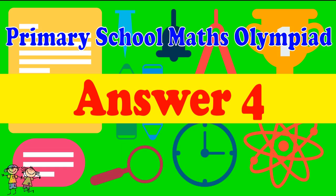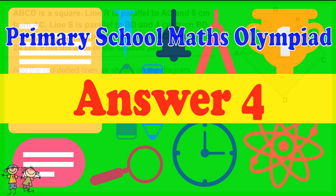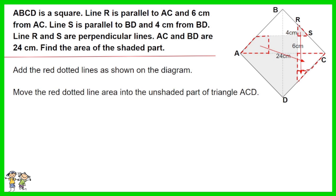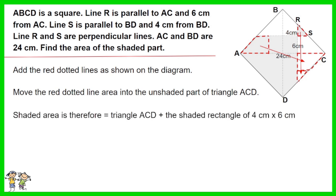Answer for Question 4. Add the red dotted lines as shown on the diagram. Move the red dotted line area into the unshaded part of triangle ACD. The shaded area is therefore equal to triangle ACD plus the shaded rectangle of 4 cm by 6 cm. Calculate and add up their areas, and the answer is 168 cm².